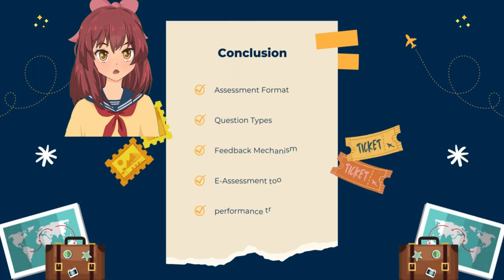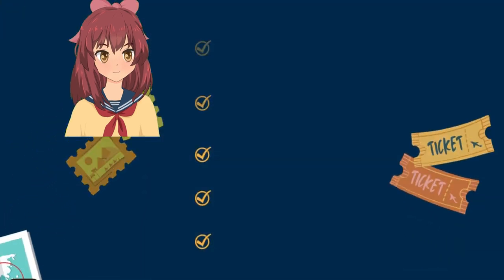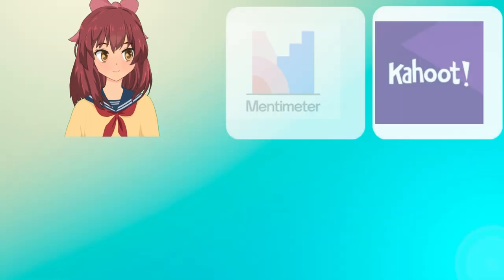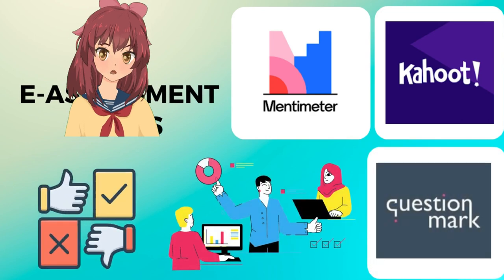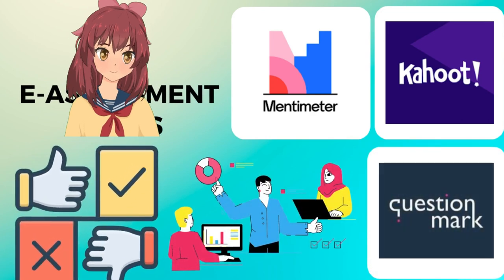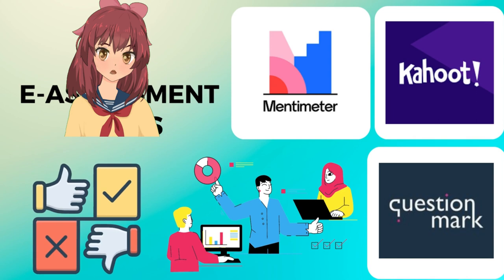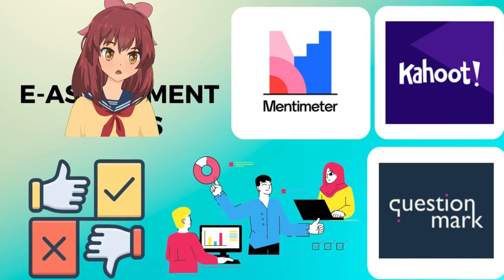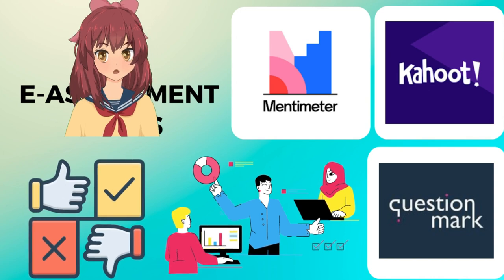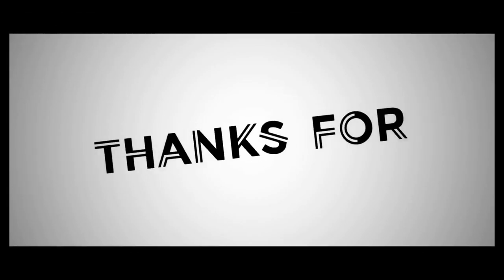In conclusion, designing eAssessments that enable effective feedback requires careful consideration of the assessment format, question types, and feedback mechanisms. eAssessment tools like QuestionMark, Kahoot, and Mentimeter offer a range of options to create and administer assessments that align with specific learning outcomes or job performance criteria, while providing immediate and comprehensive feedback to learners. Additionally, the use of adaptive assessments and performance tracking tools can enhance the effectiveness of eAssessments by providing personalized feedback and tracking learner performance. Thank you for watching.